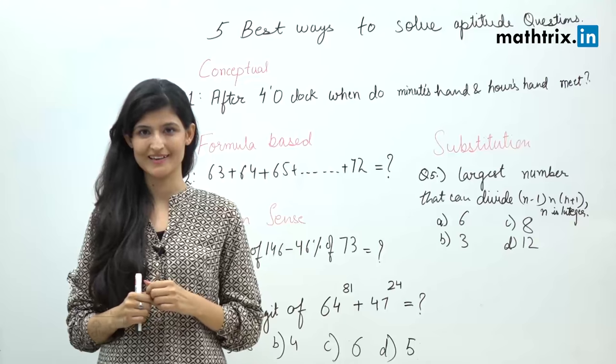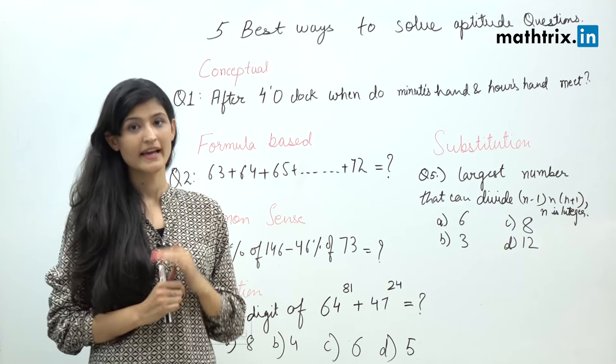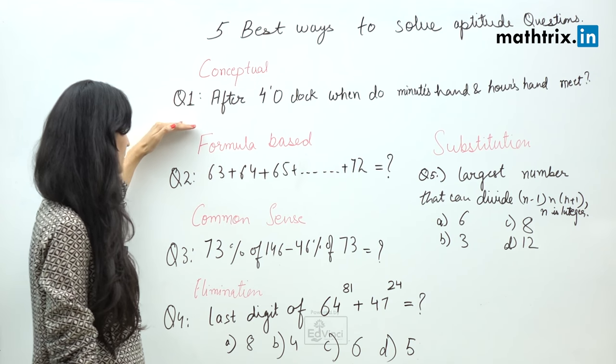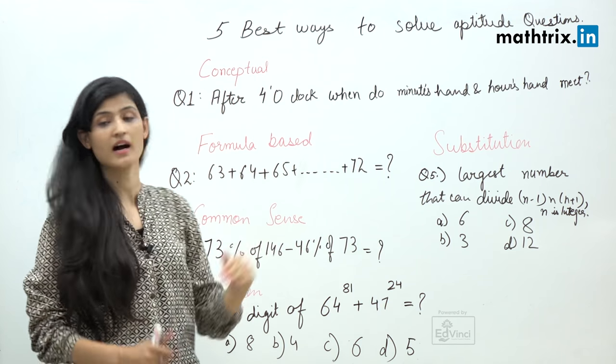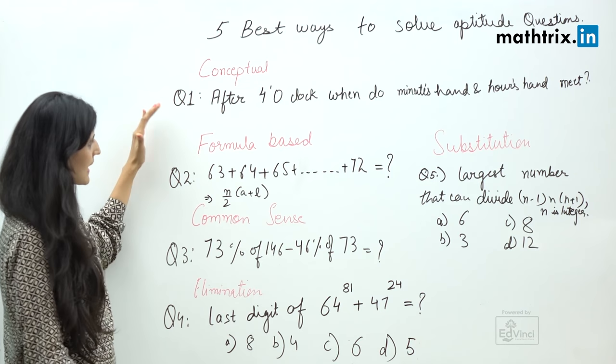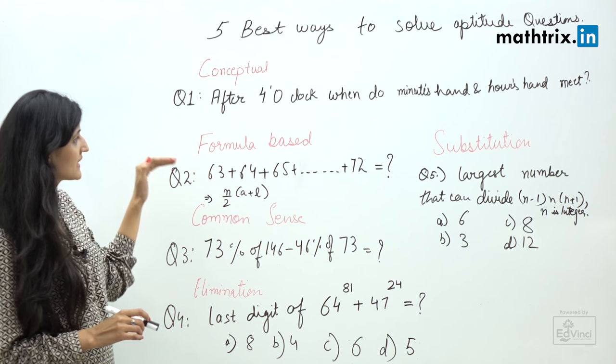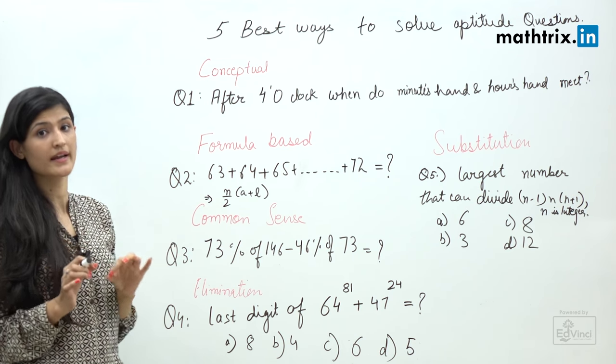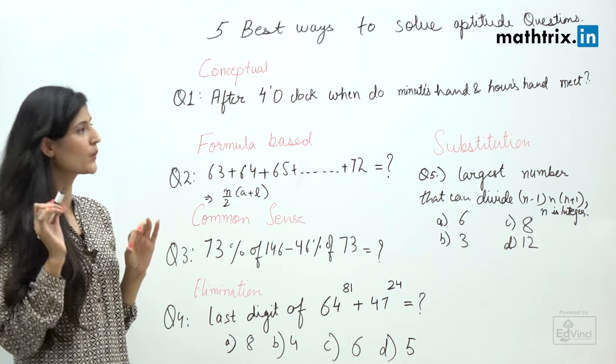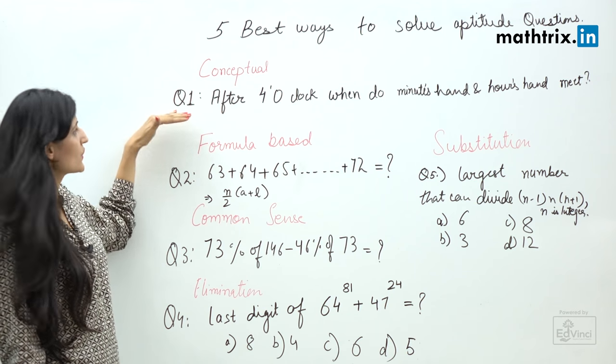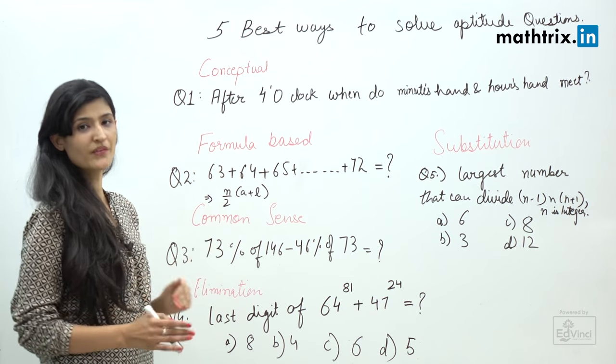The first way is the conceptual approach. In conceptual approach, I have an example for you: after 4 o'clock, when do minute hands and hour hands meet? To answer this question, we have to use the concept of how much distance a minute hand or an hour hand travels in one hour. With that, you can easily answer that question. That's why this is called conceptual approach.